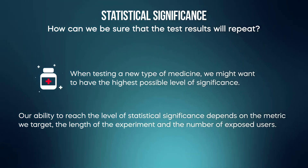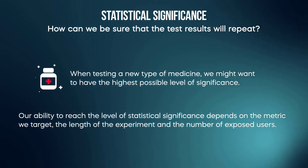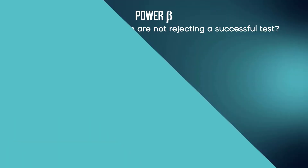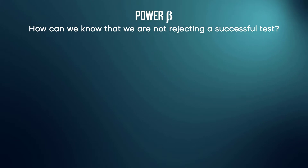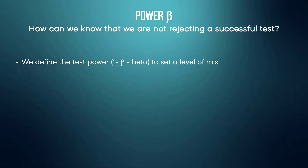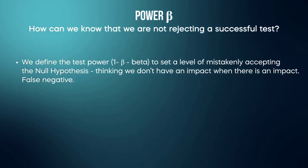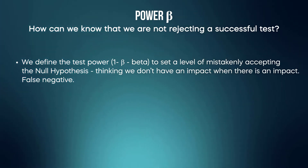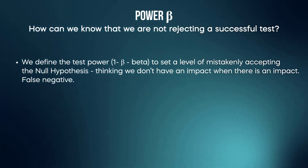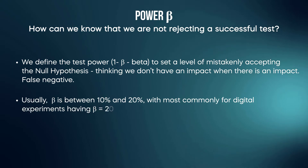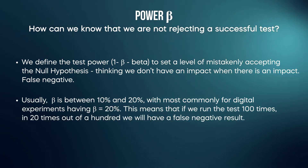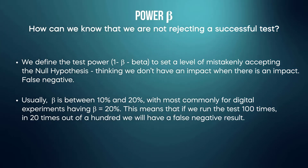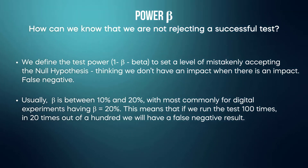To make sure that we are not rejecting a successful test, we need to introduce the power of the test. We define test power as 1 minus beta to set a level of mistakenly accepting the null hypothesis — thinking that we don't have an impact when we expected there would be one. This is called a false negative. Usually beta is somewhere between 10 and 20 percent, with the most common value for digital experiments being beta of up to 20 percent.